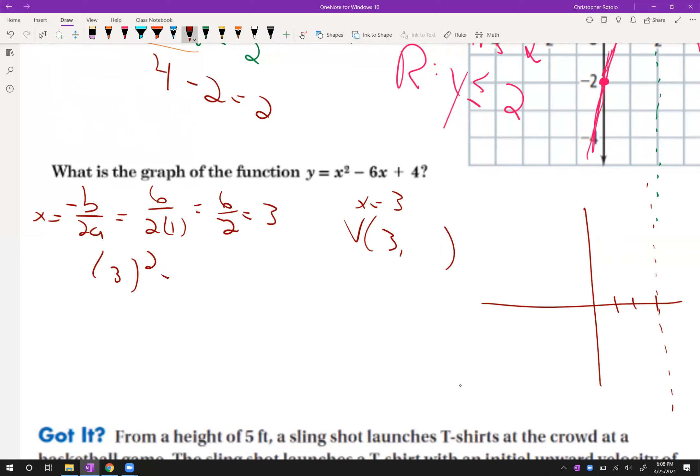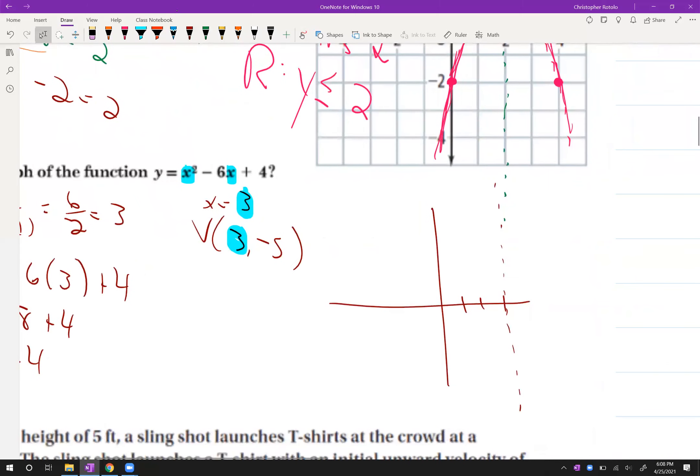I also know the vertex starts with 3 and I have to plug that in to find out what happens next. So 3 squared minus 6 times 3 plus 4. So all they did was I took that 3 that we solved for and I put it in these two places. 3 squared is 9 minus 18 plus 4. So remember these are half of each other. So negative 9 plus 4 is negative 5. So the vertex is 3, negative 5.